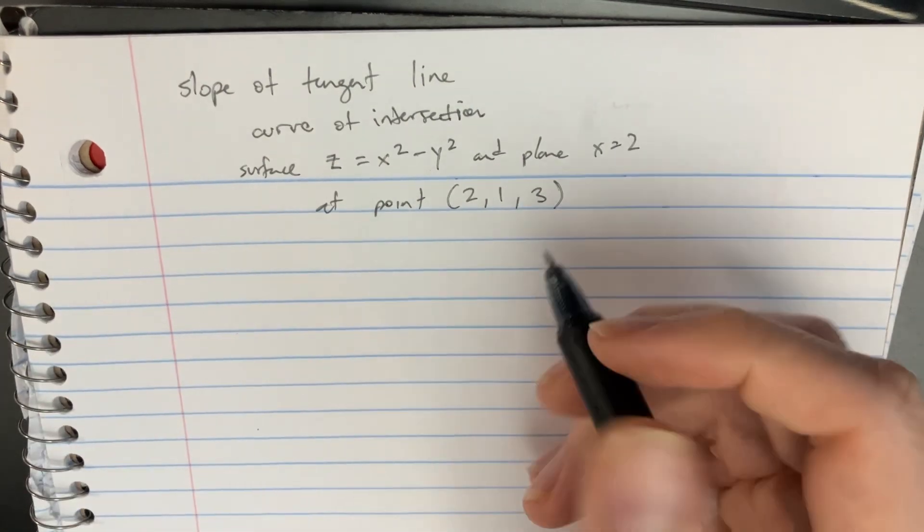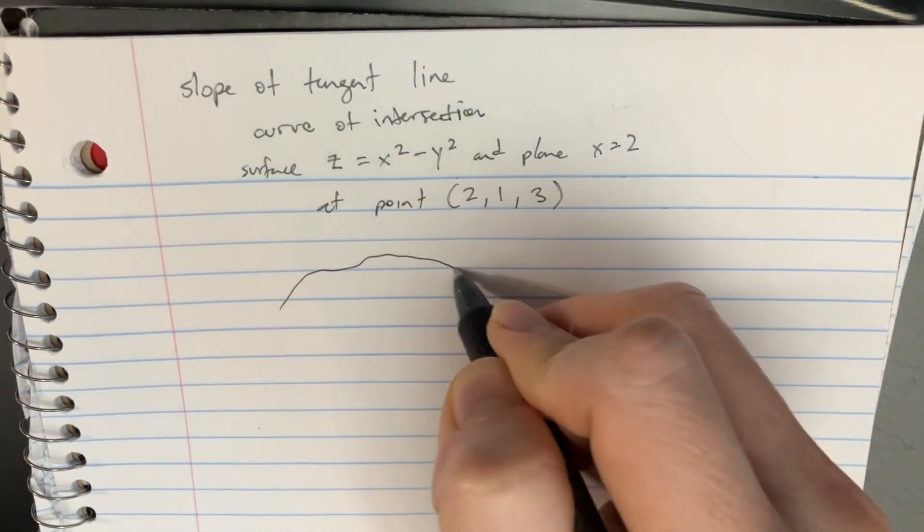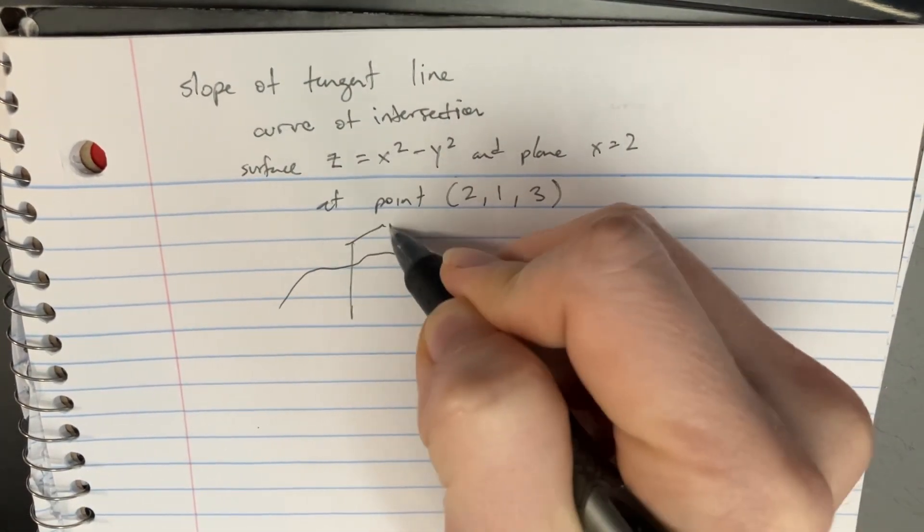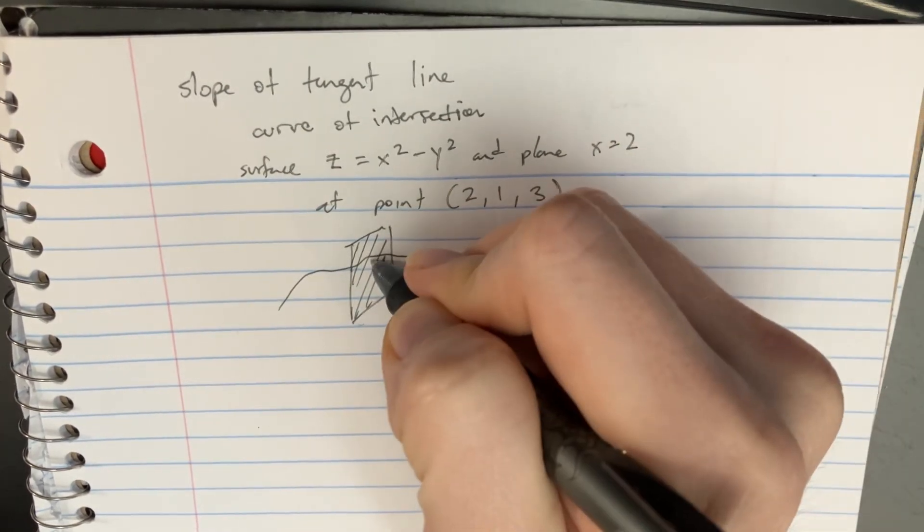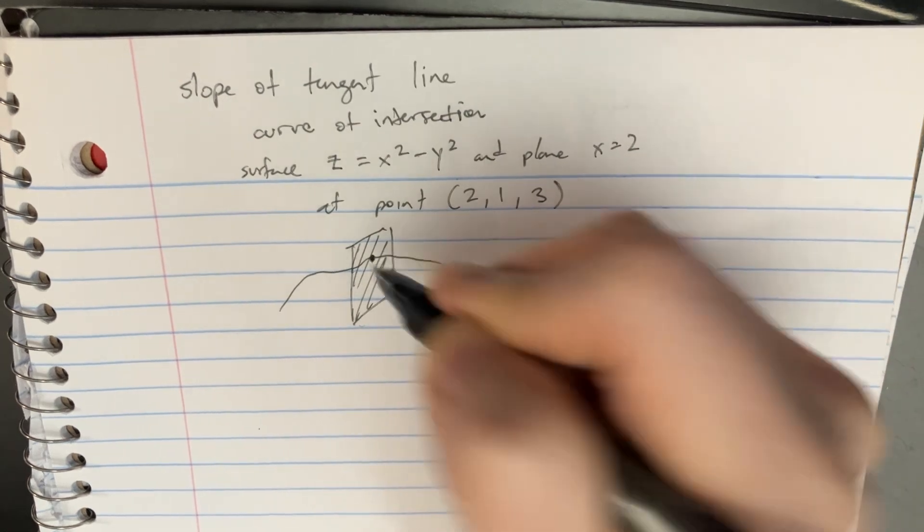So let's try to imagine what that looks like. We might have this curve. We're going to have this plane x equals 2 right here. And so it's essentially going to touch at that particular point.